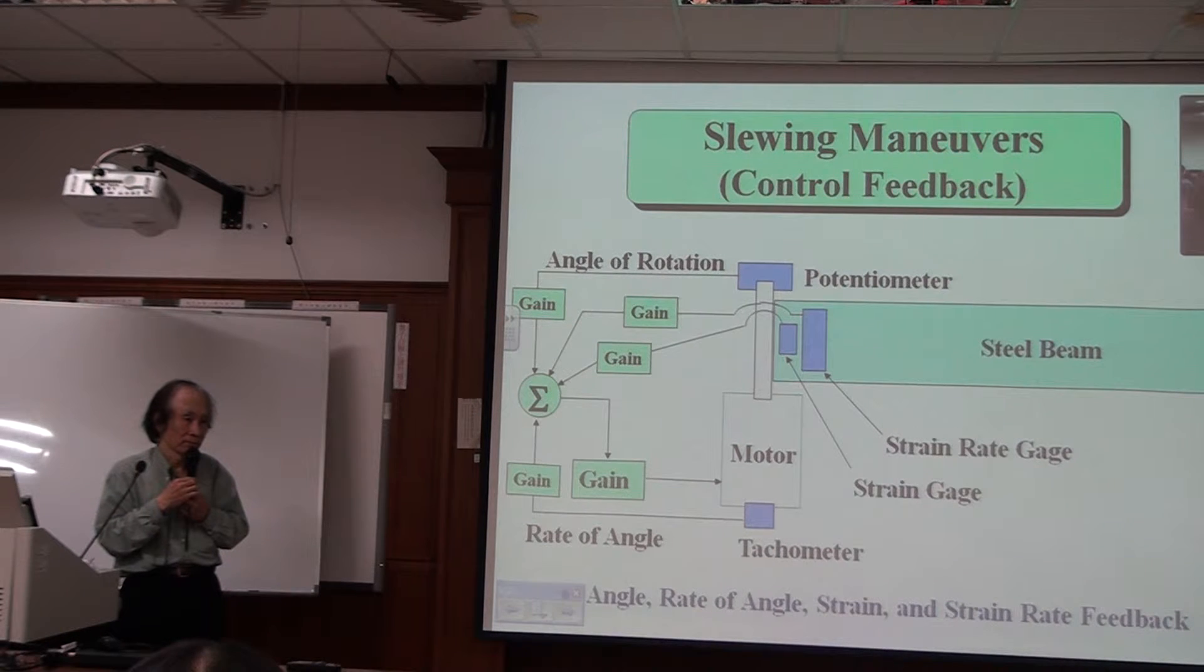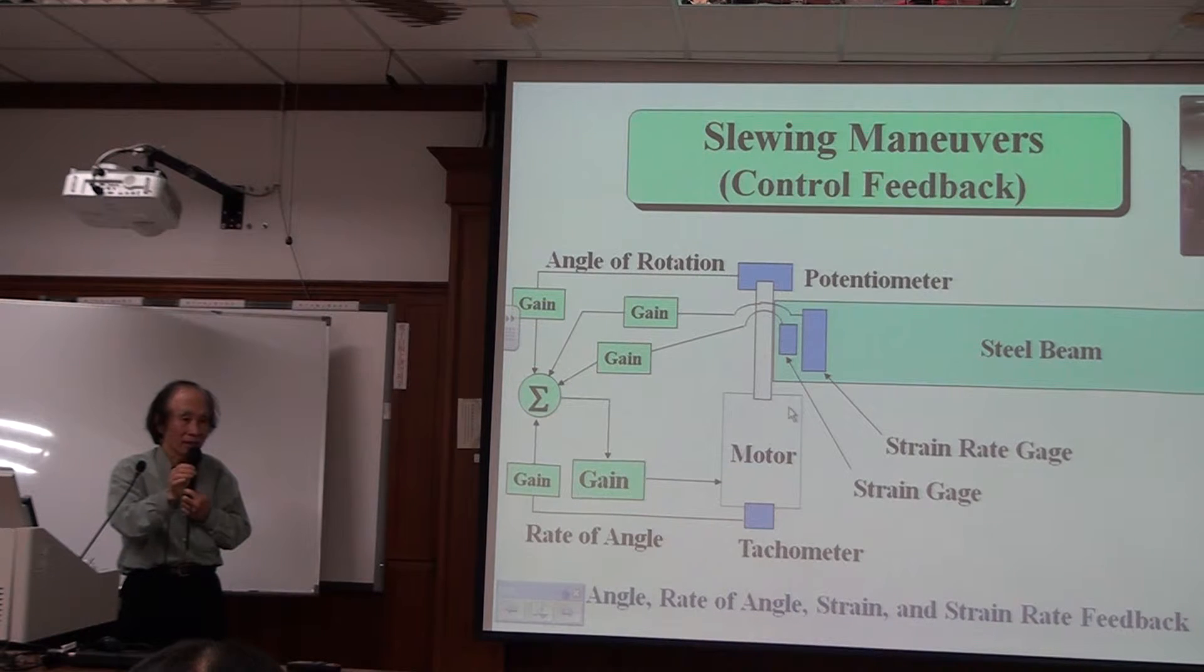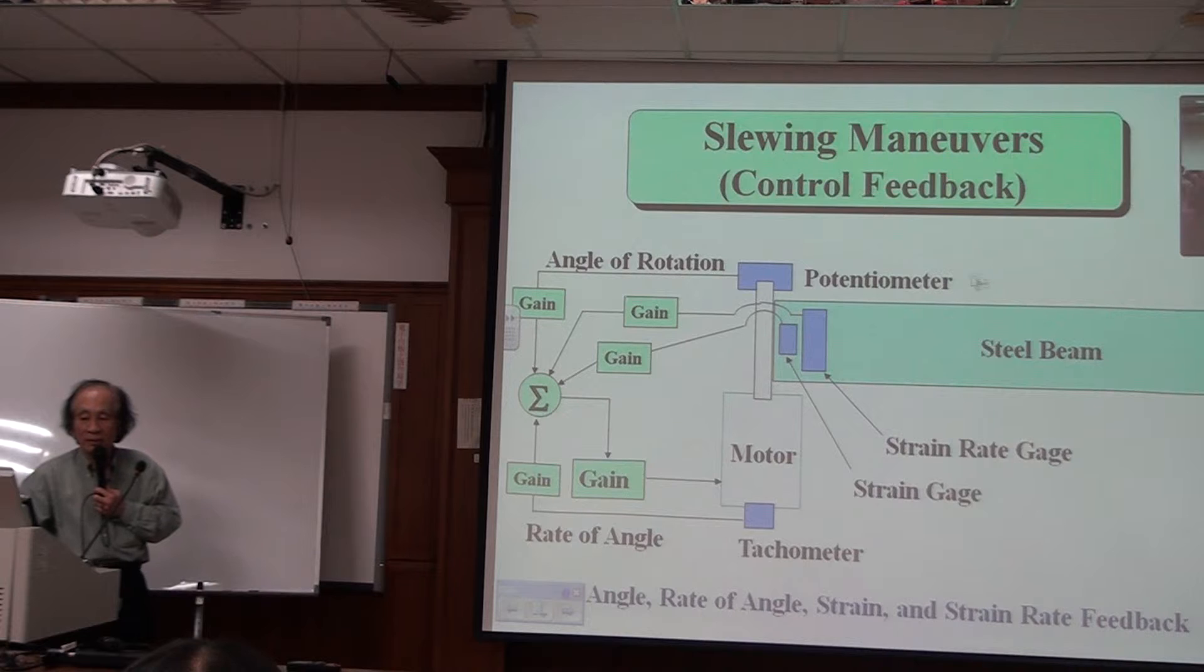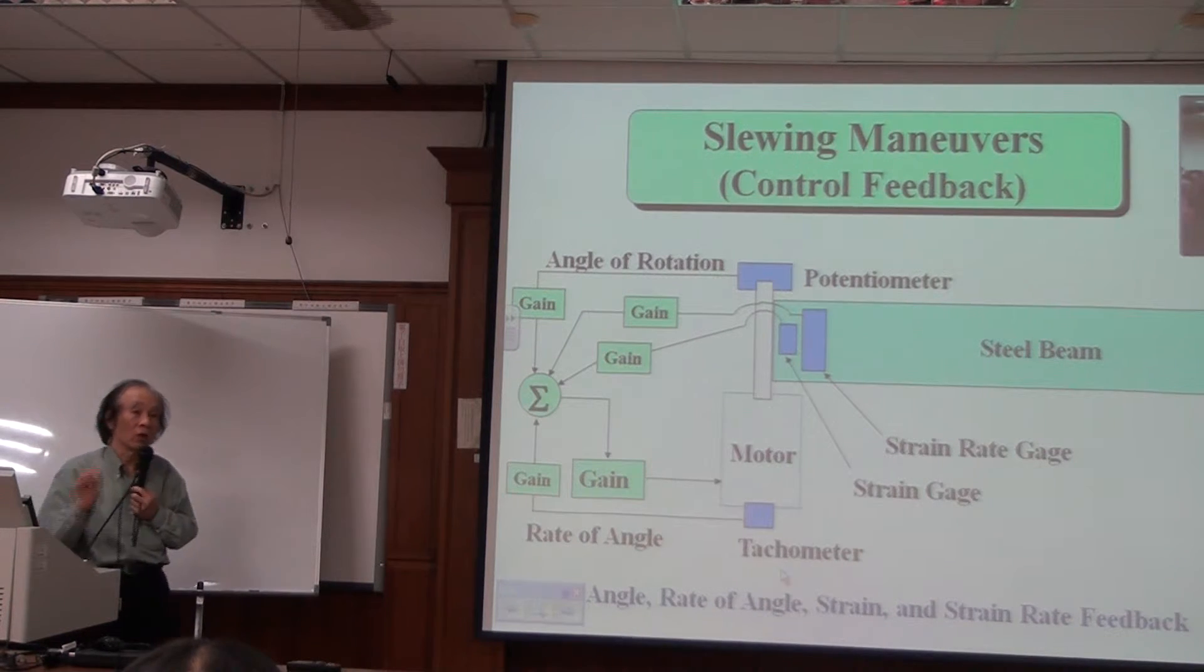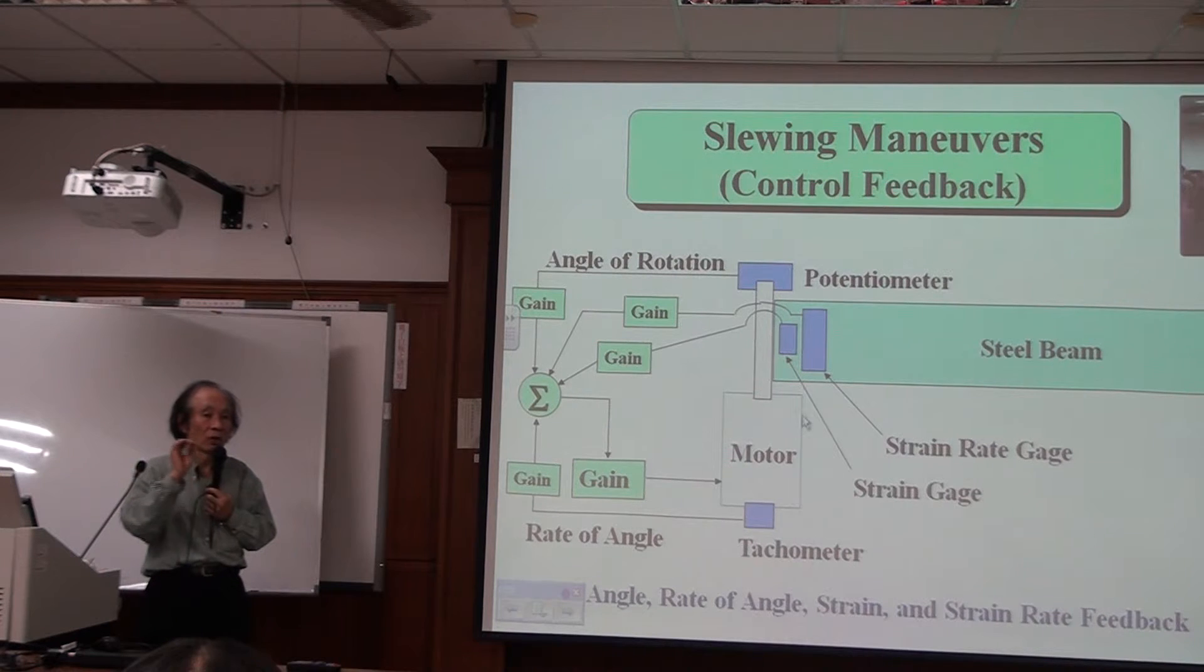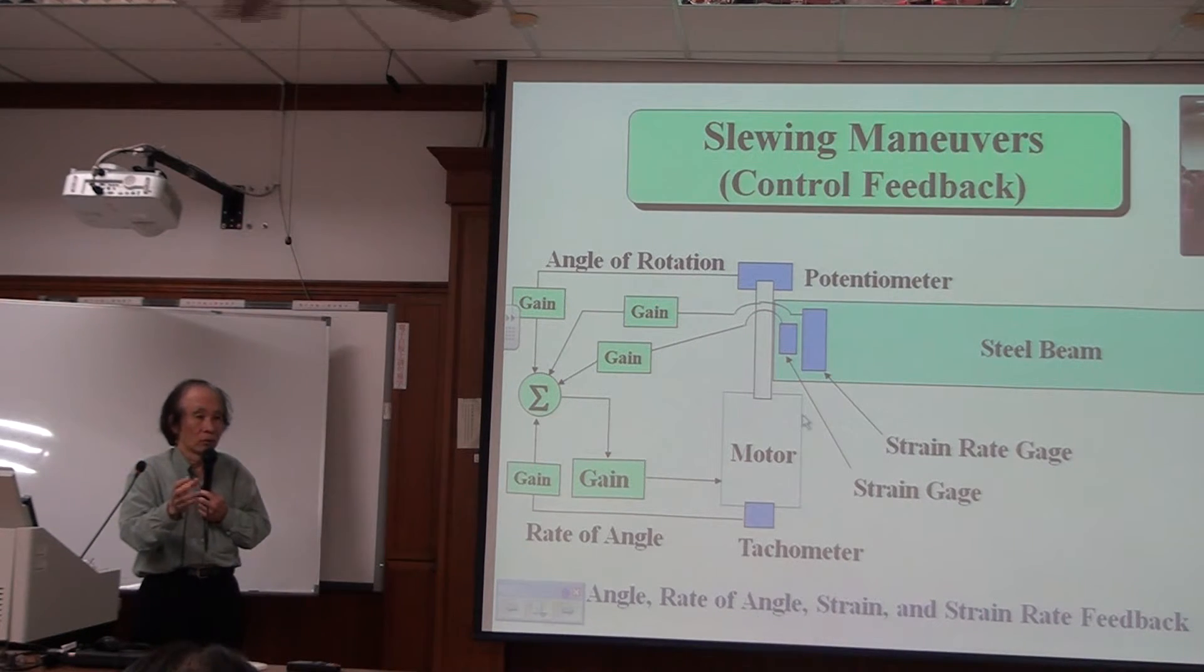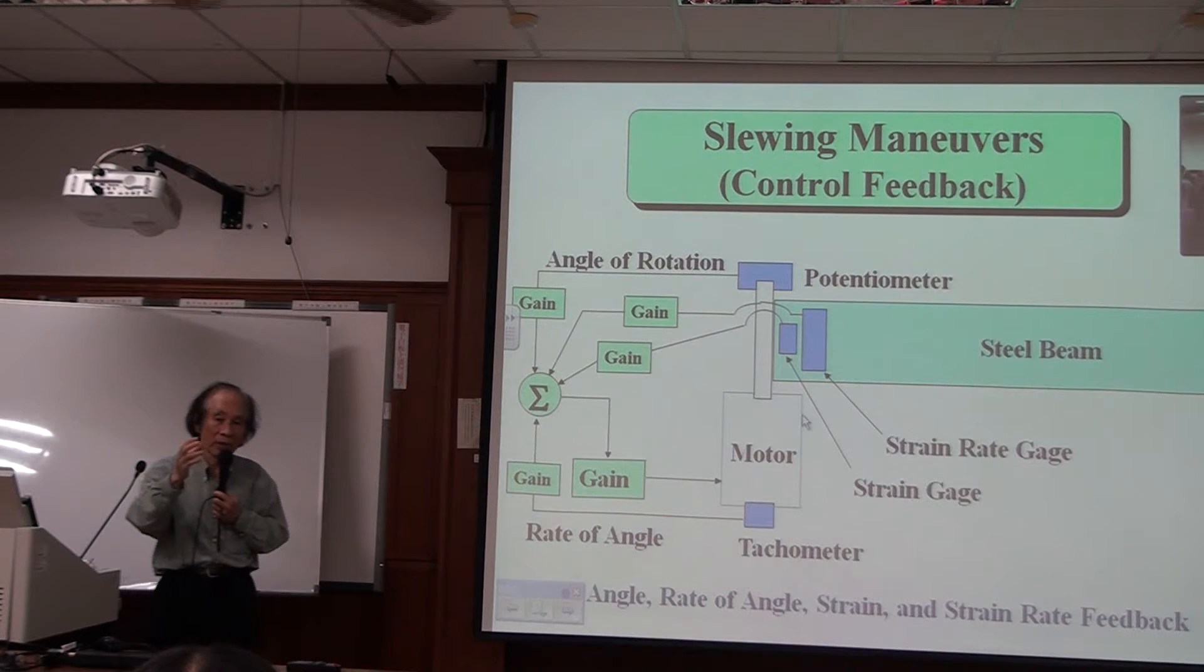Now, you have learned from this class how to calculate the gain necessary to drive your motor. This potentiometer, this strain gauge, this strain rate gauge, this tachometer—we call these sensors. This motor, we call the input or actuator. So we have sensors as our output. We have the motor as our input. So we have output and input.